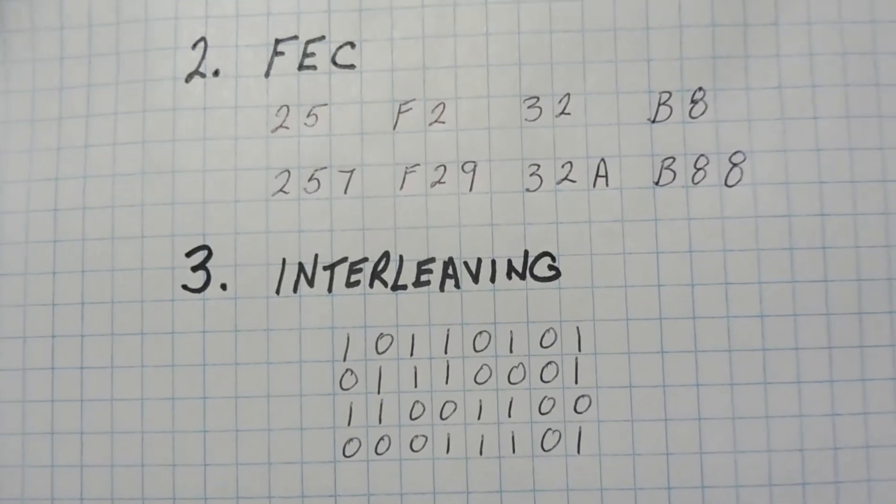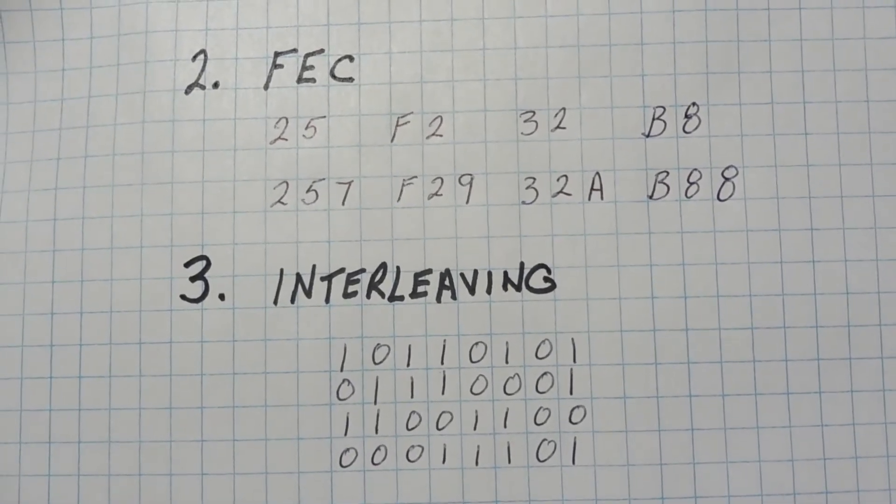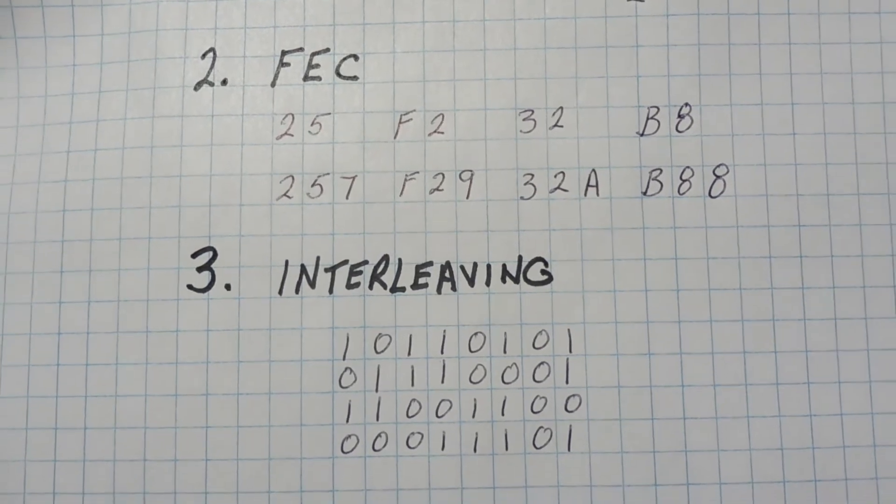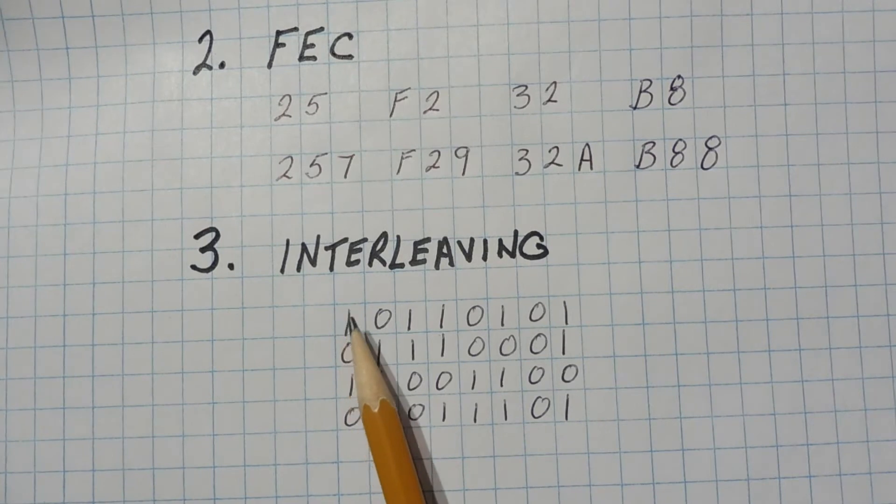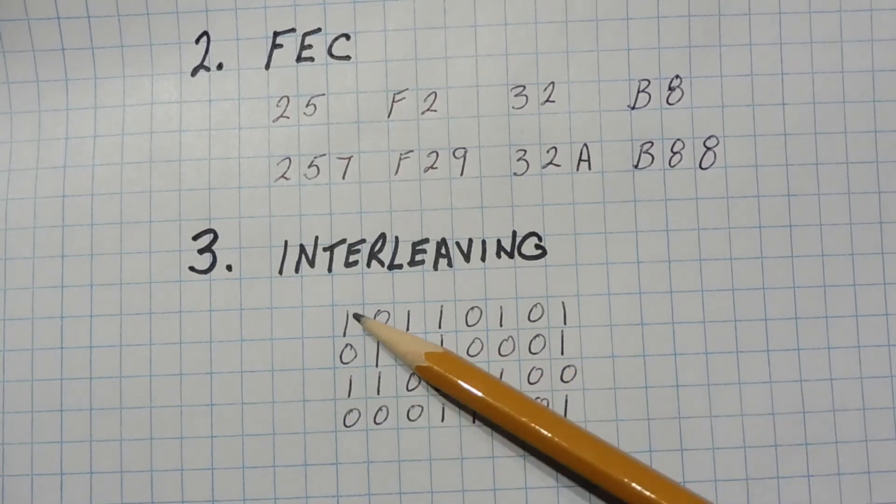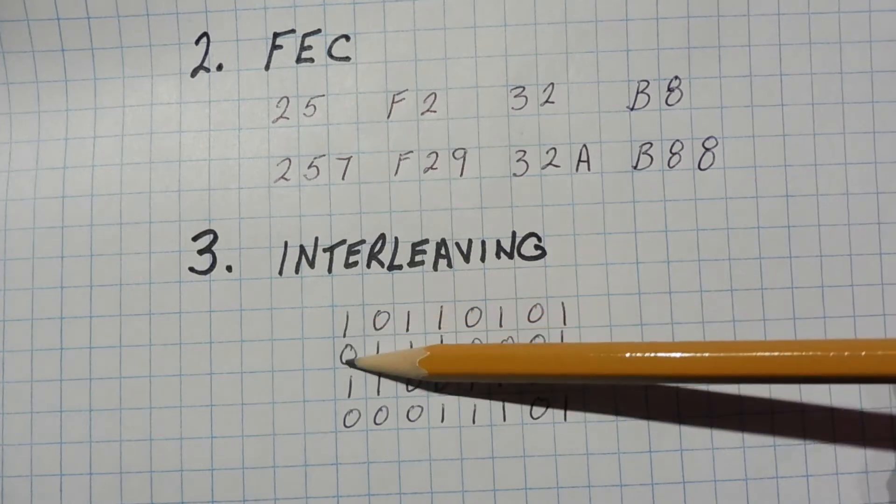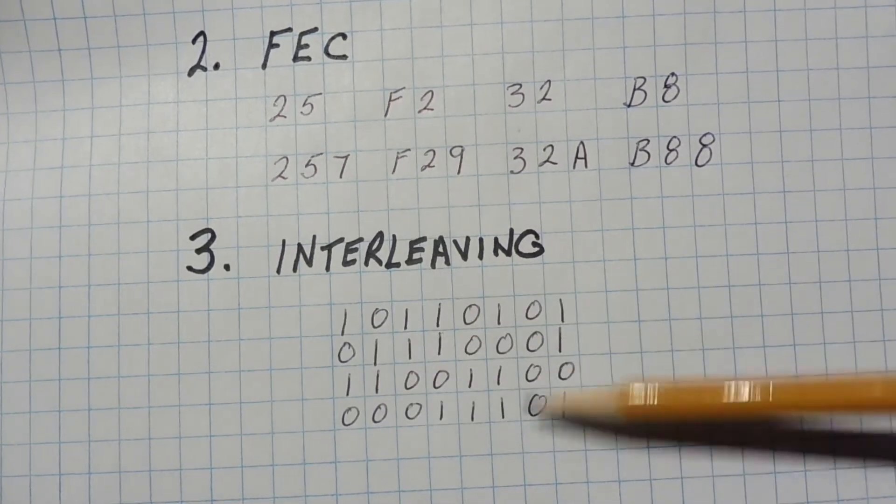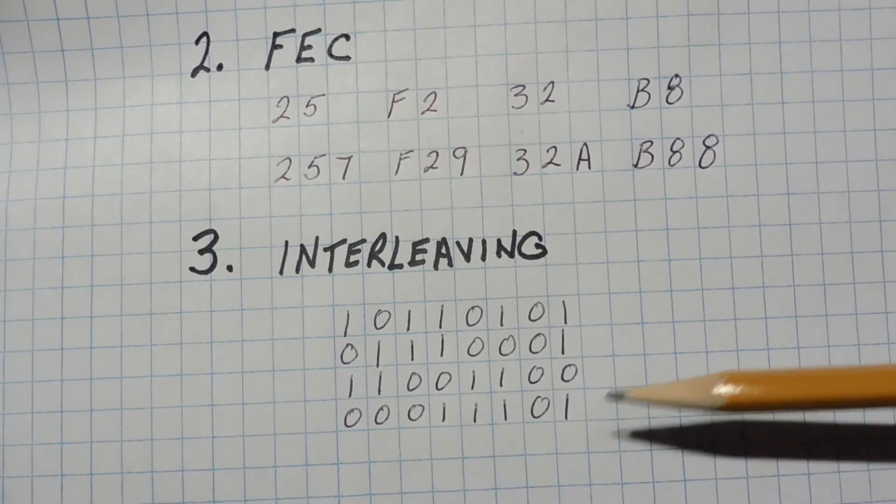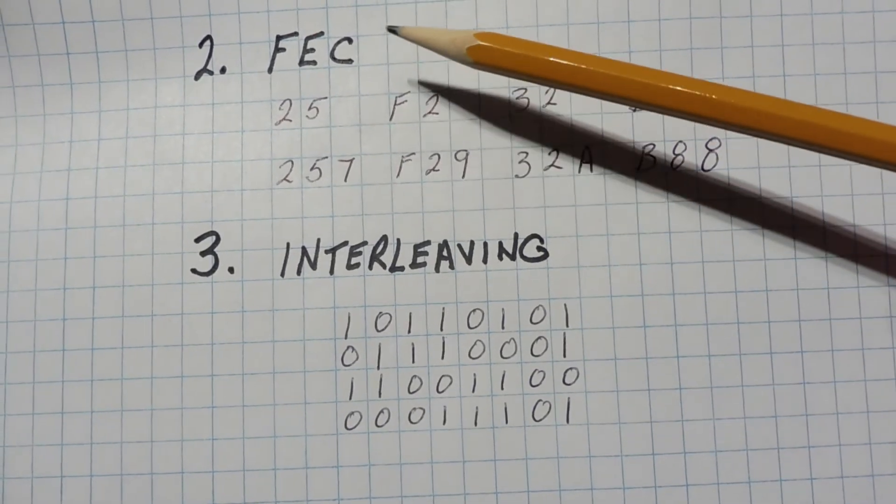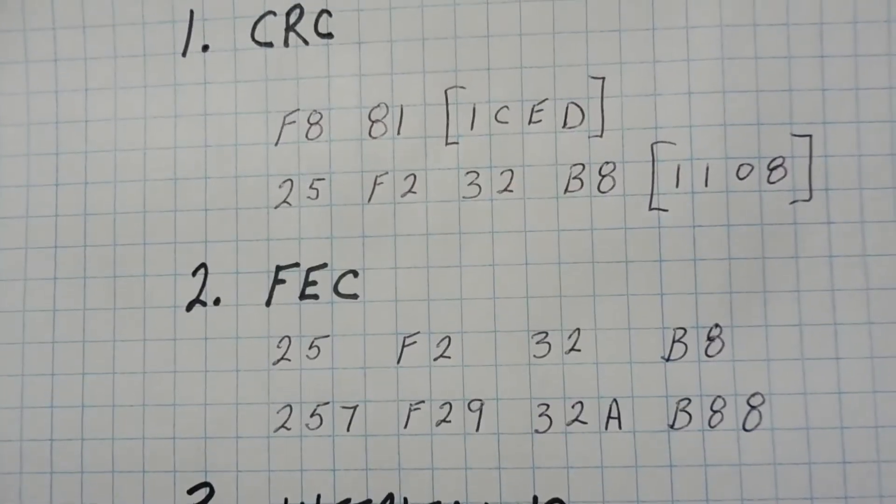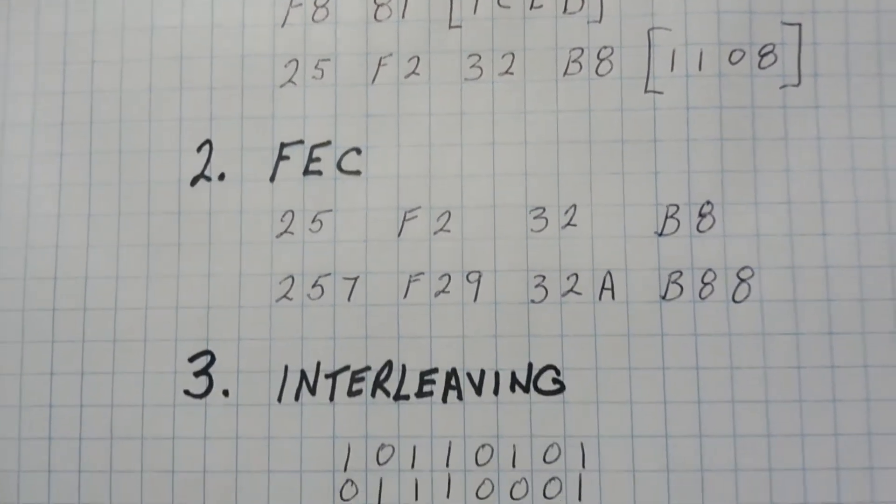Now the third one is interleaving. Interleaving works together with forward error correction, and what it does, it spreads the data out over in the bitstream. So if there's any burst noise, there'll be a higher chance that the errors will be single bit errors. So you can see here, if we want to send out this data, we would send it out 10110101 and then go to the next one and the next one. But instead of doing that way, instead of going rows, we send it per column. So we would send 1010, 0110, and we would continue on and we would interleave it. Now at the receiving end it would de-interleave it, and if there was any burst noise, most likely there would be single bit errors and they would be able to correct it using the FEC. So those are the three protocols that we're going to look at, and we're going to go through some calculations.